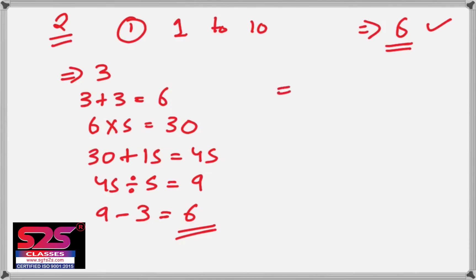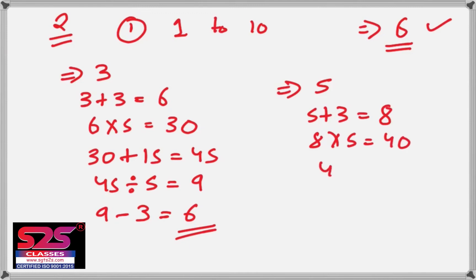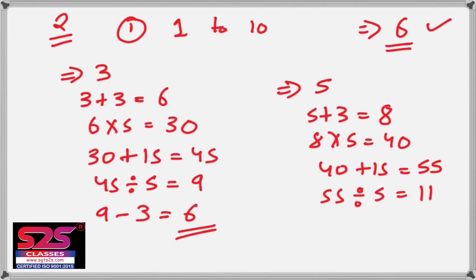Let's take another example. If your number is 5, add 3 to get 8, multiply by 5 to get 40, add 15 to get 55, then divide by 5 to get 11. The final step is to subtract the number you imagined: 11 minus 5 gives you 6, as I said.